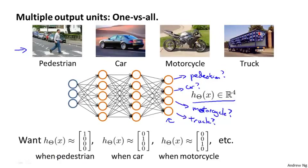And thus, when the image is of a pedestrian, we would ideally want the network to output 1,0,0,0. When it's a car, we want it to output 0,1,0,0. When it's a motorcycle, we want it to output 0,0,1,0, and so on.